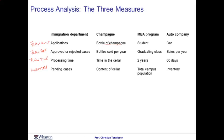Consider an MBA program as a production process. The flow unit here is a student. The flow rate is the incoming and/or graduating class — the number of students going through the process per year. The processing time, at least here at Wharton, is a two-year program — the time the student spends at school. The inventory, then, is the total number of students on campus in the first year and in the second year.